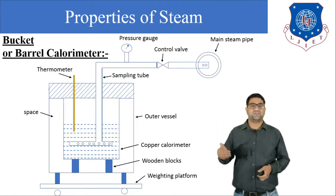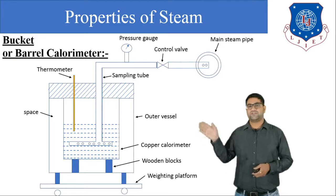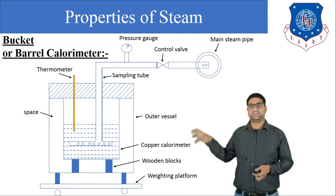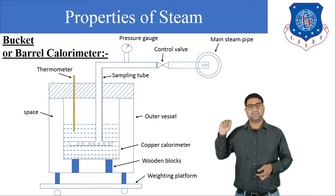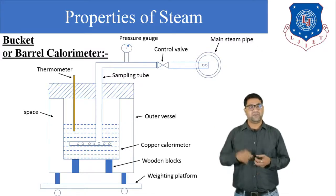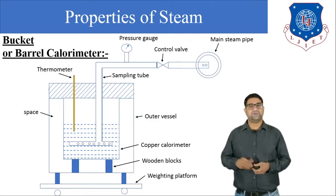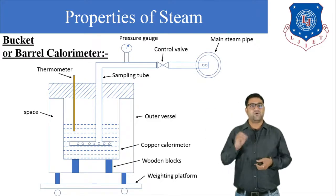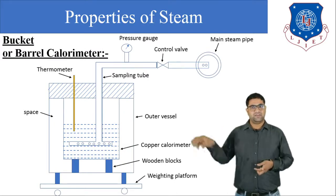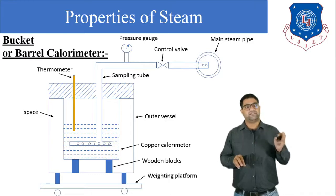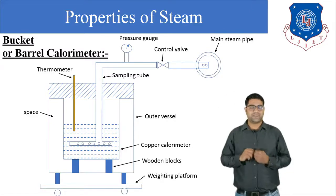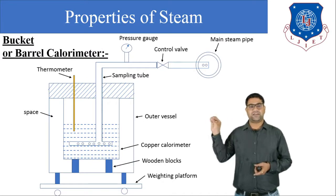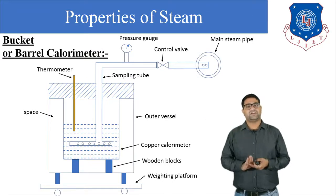The barrel calorimeter is sometimes also known as the bucket calorimeter. Looking at the diagram, there are many components. The first is the main steam pipe, which is connected with the boiler. The boiler is used to produce steam, which is then used to run a turbine to produce electricity. So the main steam pipe connects with the boiler to supply steam. Our main aim here is to measure the dryness fraction of the steam.